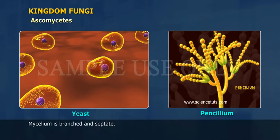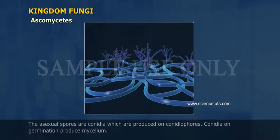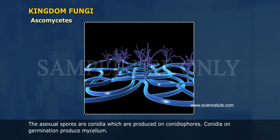Mycelium is branched and septate. The asexual spores are conidia, which are produced on conidiophores. Conidia on germination produce mycelium.